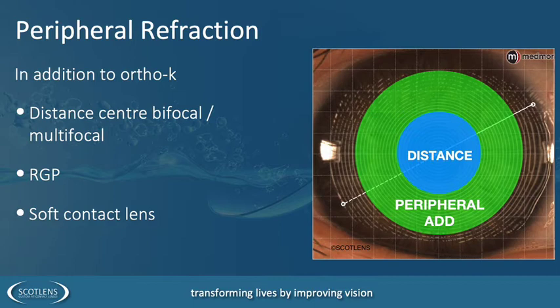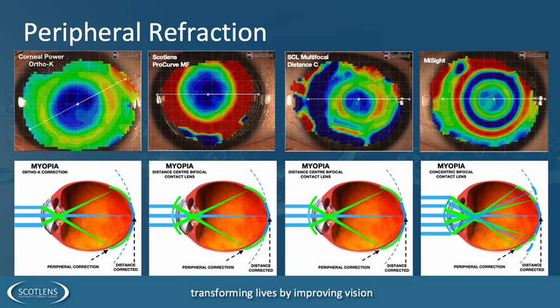In addition to Ortho-K, we can have any distance-centre bifocal or multifocal — whether gas perm or soft lens — or similar technology coming into spectacle lenses. Looking at contact lenses: the left image is Ortho-K; the second from left is a gas permeable distance-centre multifocal from Scotlens with no prescription limitations; the third is the BioAffinity D lens, a distance-centre multifocal; and the right image is the MiSight, a concentric ring pattern designed to be independent of pupil size.